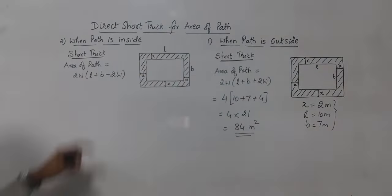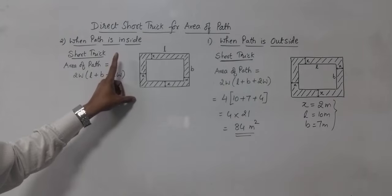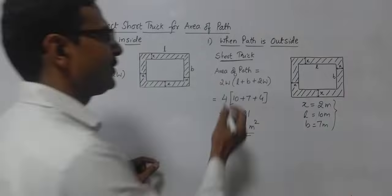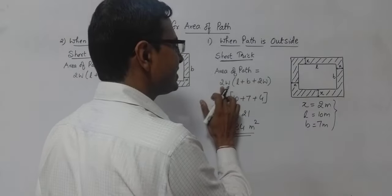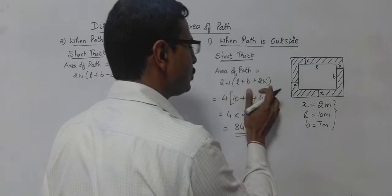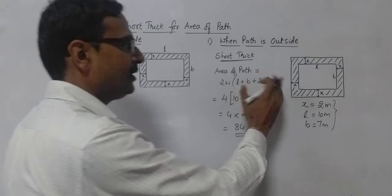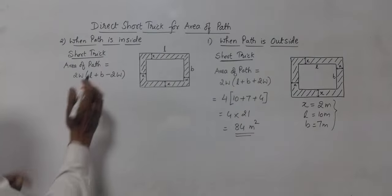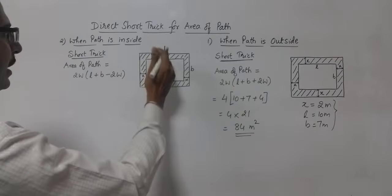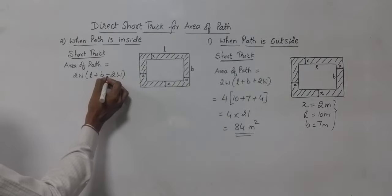So likewise, let's see what happens when the area of the path is inside. So you can see the difference between the two. Here we have the short trick as twice the width times length plus breadth plus 2w. So there is no negative sign here. But when the path is inside the plot, then there is a negative sign here.